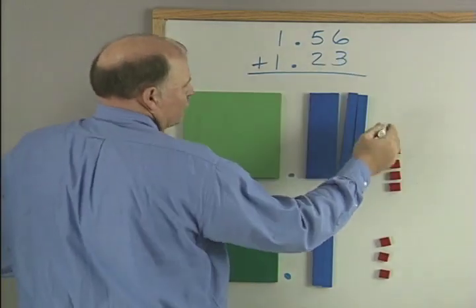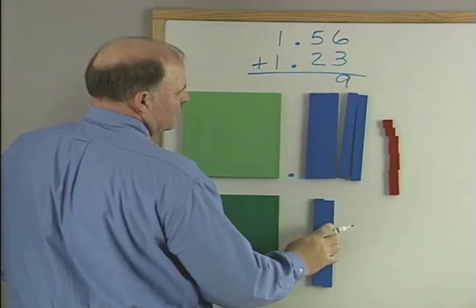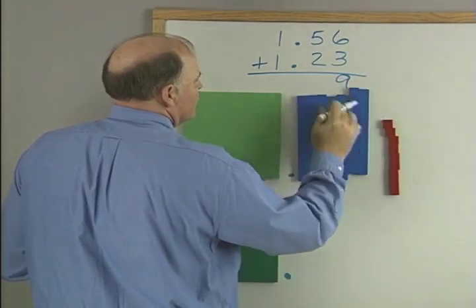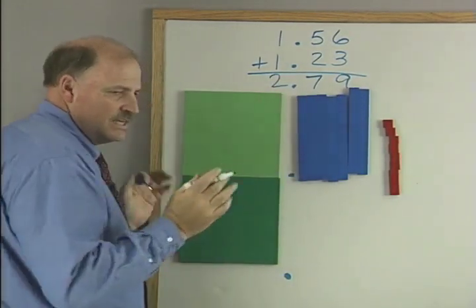So you just simply say 6 plus 3 is 9 hundredths, 2 tenths plus 5 tenths is 7, 7 tenths. And 1 plus 1 is 2. This is easy.